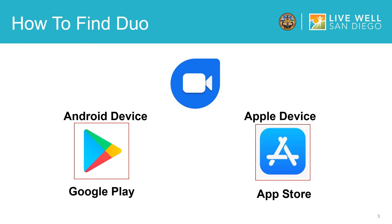Once there, type Duo into the search bar and tap Search, or the magnifying glass. That may even populate automatically. Be sure it looks like this icon. Next, tap Install. Please note that the screenshots in this tutorial are from my Google Pixel phone, and it may look slightly different on an iPhone or other Android device.